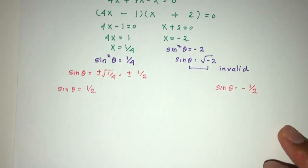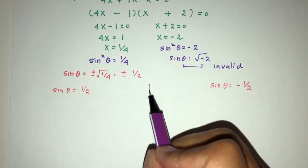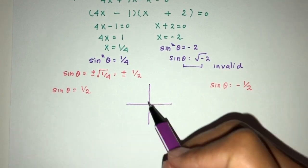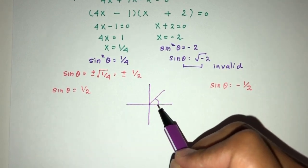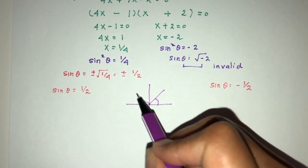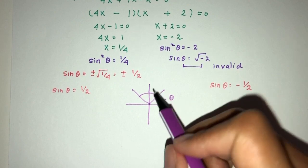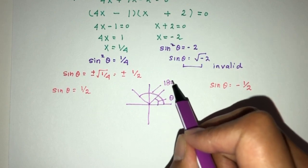So, for one point, it will be sinθ will be positive 1/2, or sinθ will be negative 1/2. Now, for the first one here, as we know by using ASTC, if sine is positive, it will be in the first quadrant, and also in the second quadrant.